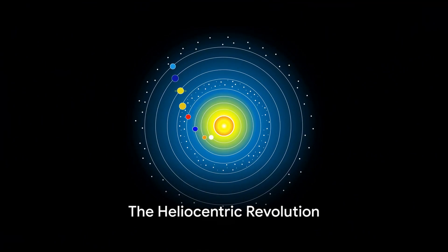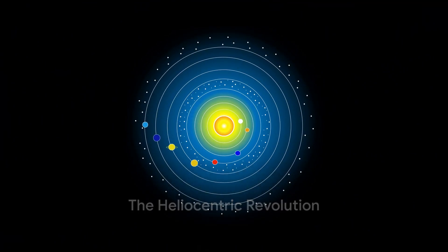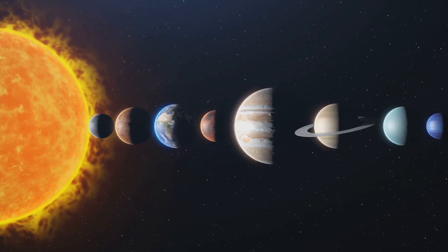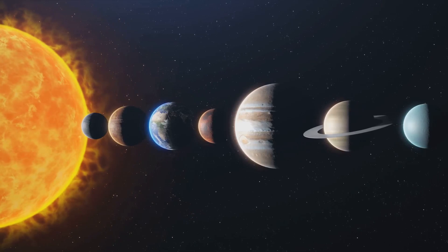Fast forward to the 16th century when Nicholas Copernicus revolutionized our perception of the universe. He postulated that the Earth revolves around the Sun, not the other way around. This heliocentric model was a radical departure from the Earth-centric view that dominated for centuries.